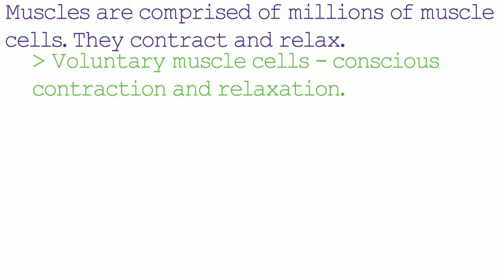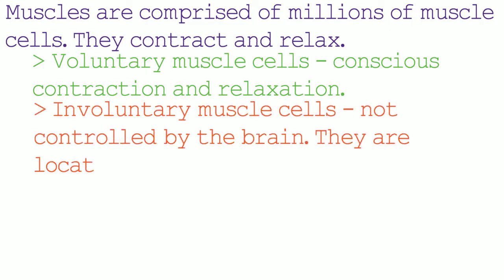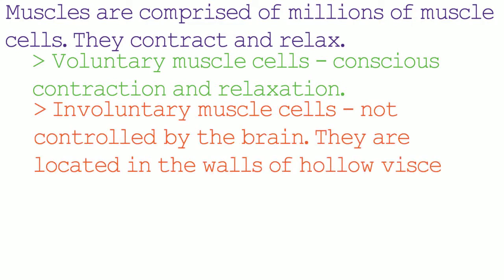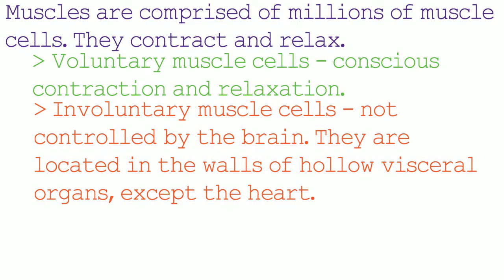Another type of muscle is involuntary muscle cells. These are muscles that are not under control by your brain. They are located in the walls of hollow visceral organs except the heart. They are present in the intestine and the bladder. Sometimes you may see involuntary muscle cells referred to as smooth muscle.